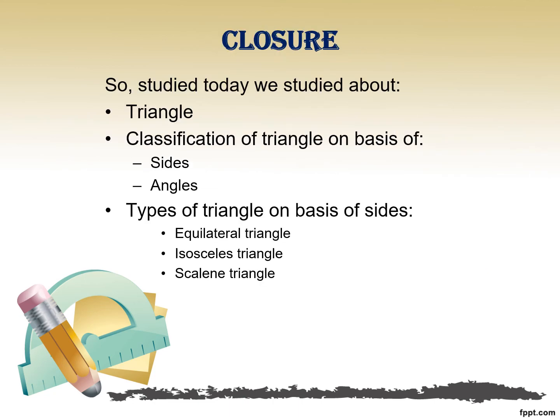That's all for the day. Let's do a quick recap of what we have learnt. We learnt about triangles and on what basis we classify them — on the basis of sides and on the basis of angles. In this video we studied the classification on the basis of sides. The three types are equilateral triangle, isosceles triangle, and scalene triangle.